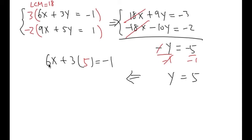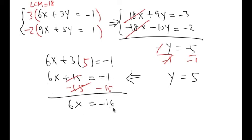Now let's work this out. I have 6x, and 3 times 5 is plus 15, which equals negative 1. Subtract 15 from both sides. I will end up with 6x equals negative 1 minus 15, which is negative 16.